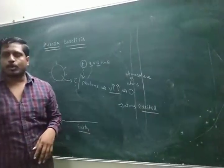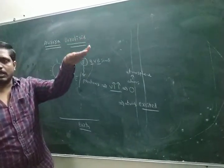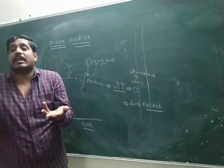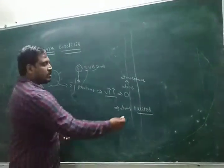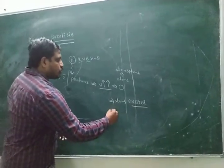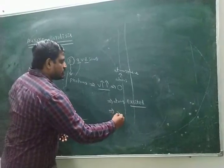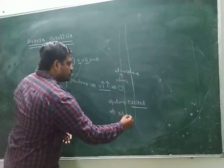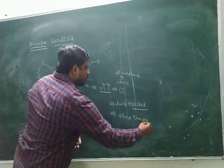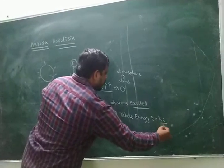According to Bohr's postulations, the electron moves from a higher orbit to a lower orbit, which has least energy. Simply, the excited atom is unstable, so it moves to the ground state and releases some energy. The energy formula in chemistry is E = hc/λ.